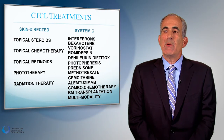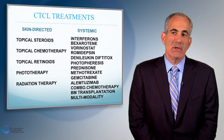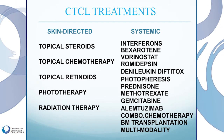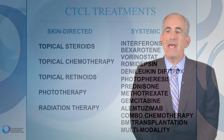Finally, here is a menu of cutaneous T cell lymphoma treatments divided into skin-directed treatments and systemic treatments. Skin-directed treatments include topical steroids, topical chemotherapy, topical retinoids, vitamin A compounds, phototherapy, and radiation therapy. On the right are systemic therapies — both oral, intravenous, and injectable. On the lower right is bone marrow transplantation, as well as a combination of so-called multimodality treatment using multiple biologic agents.